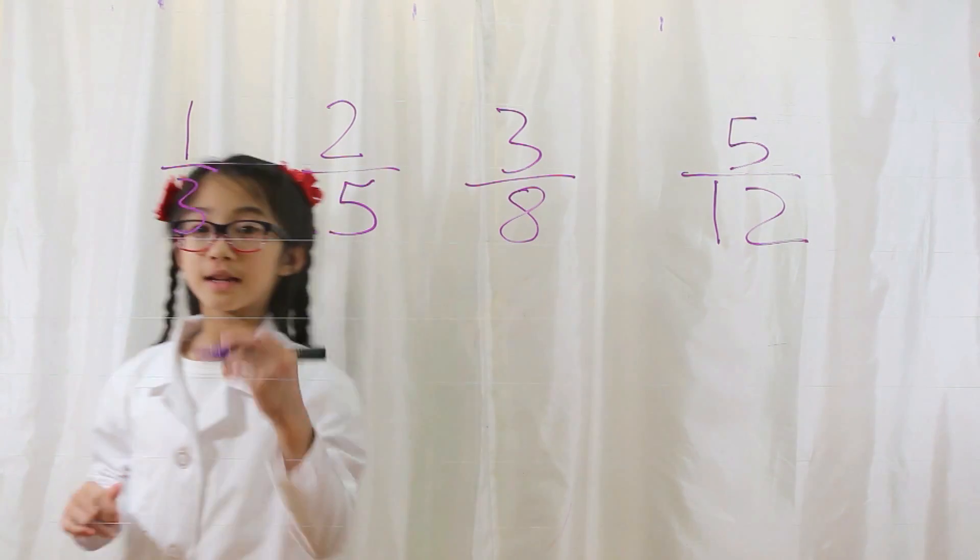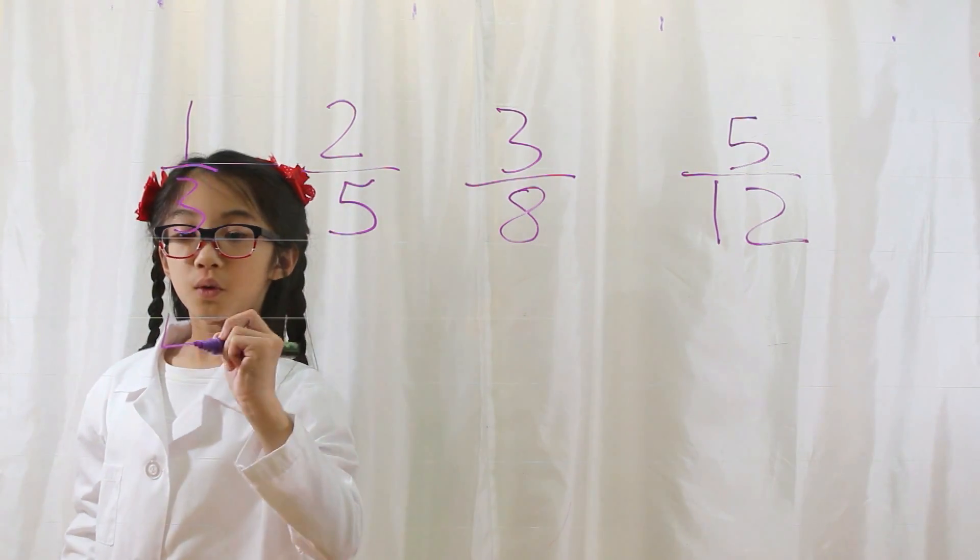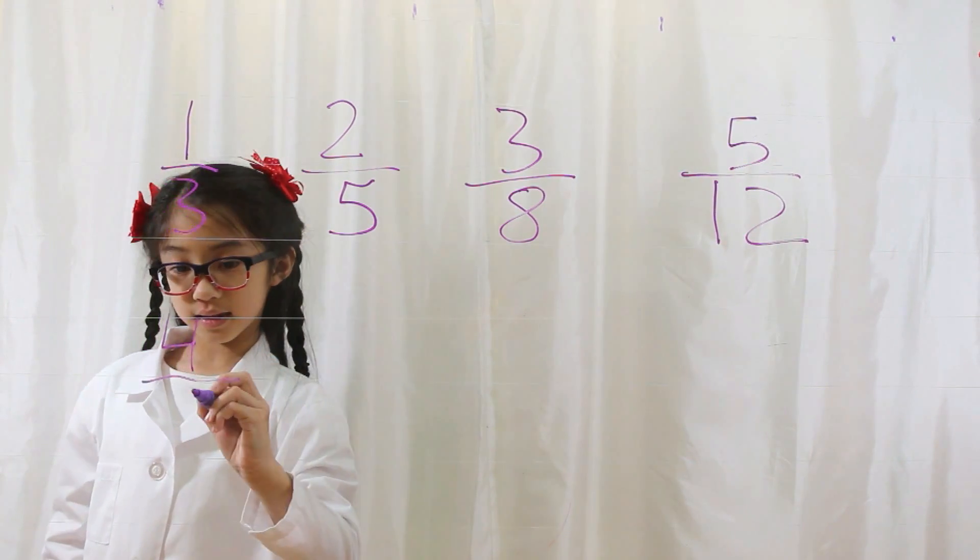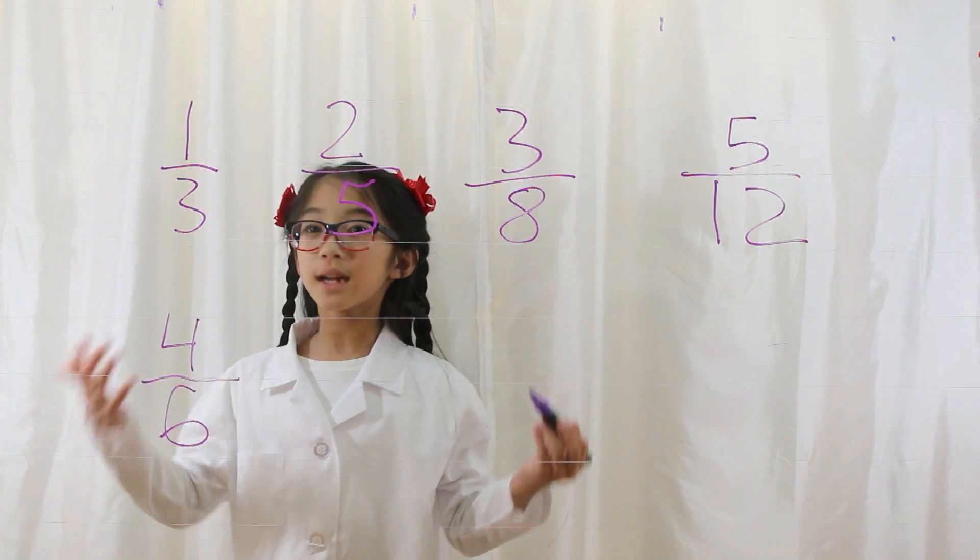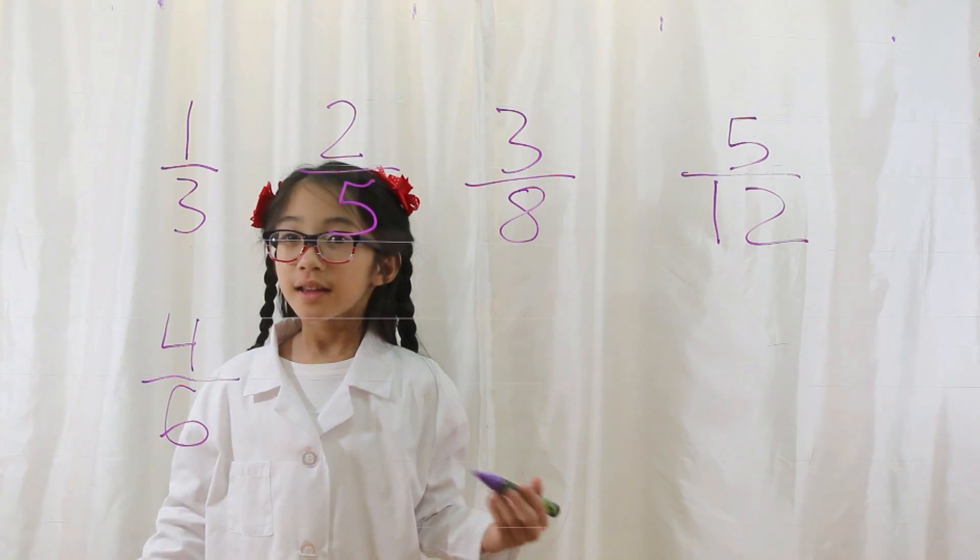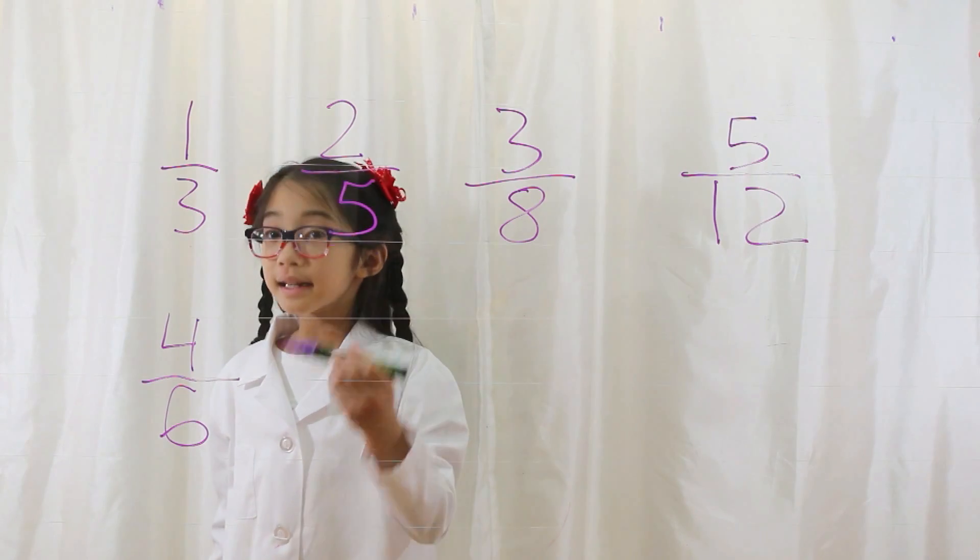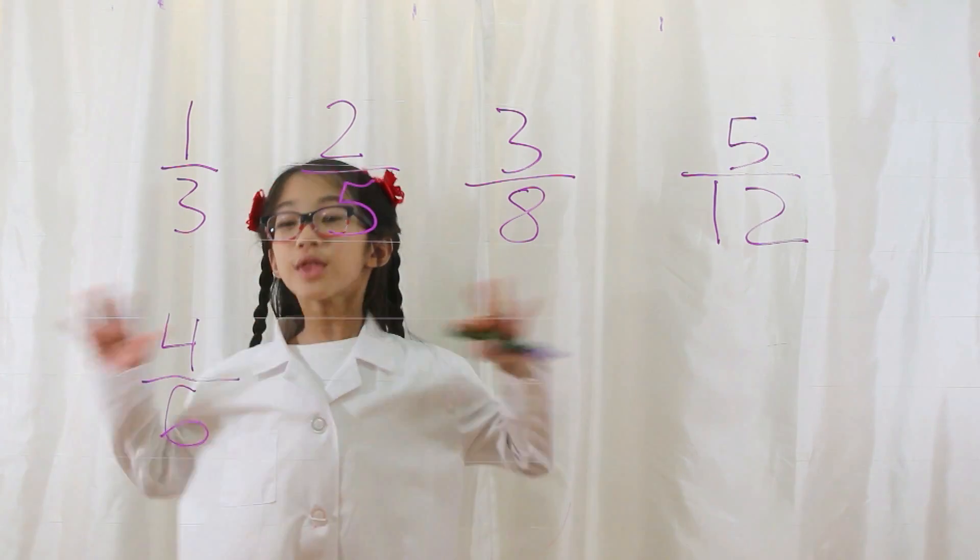Let's say you have the fraction four-sixths. To simplify this fraction, you must find the greatest common factor that can divide both the numerator and the denominator with no remainders.